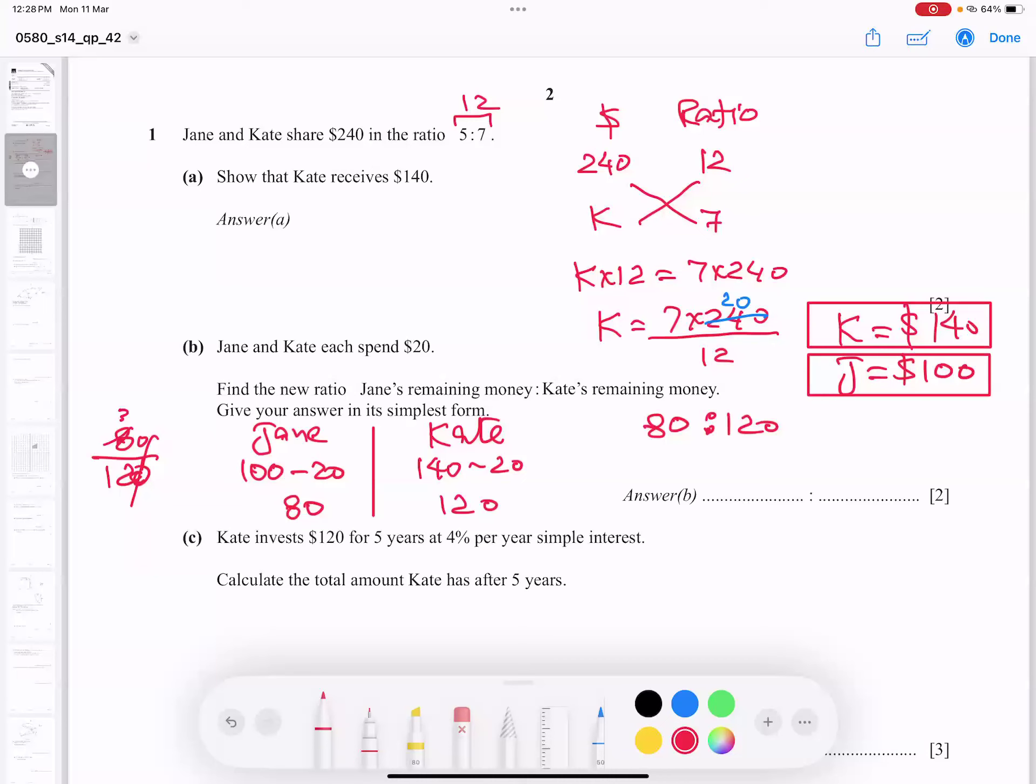And when I type 80 by 120, zeros cancel, four twos are four, threes are. So it means two ratio coming or two ratio three coming. So this is Jane and this is Kate. So I think I write here two ratio three. This is my final answer.